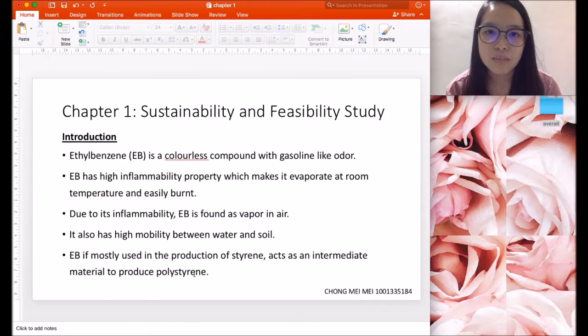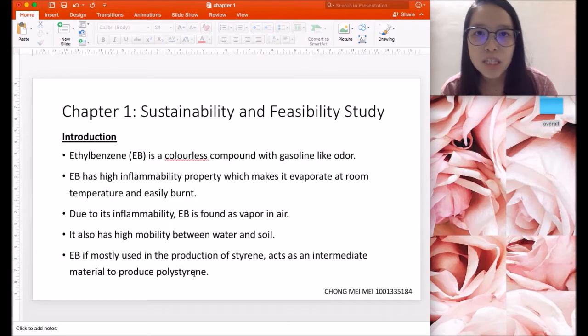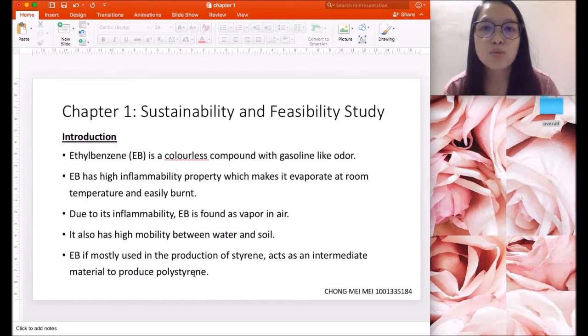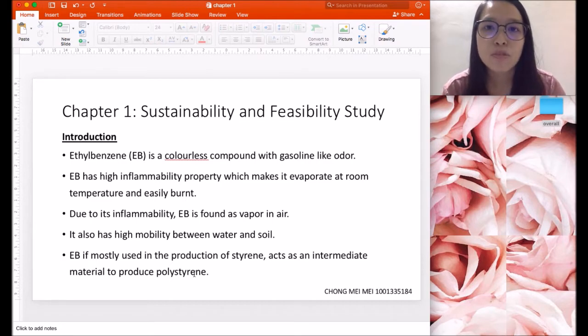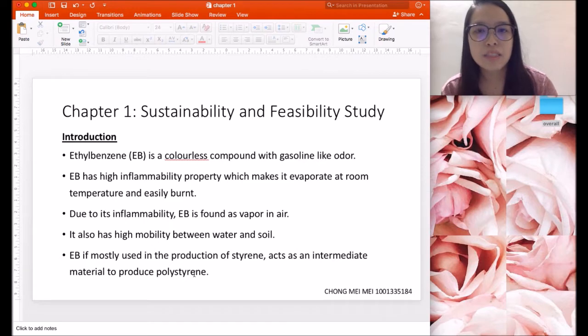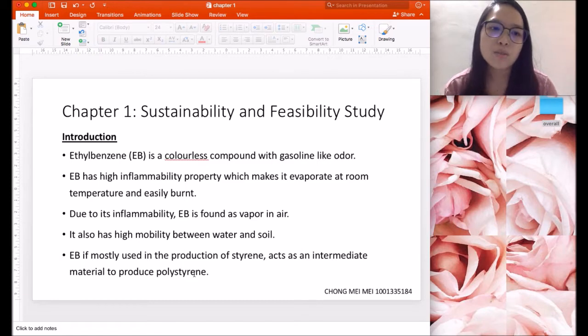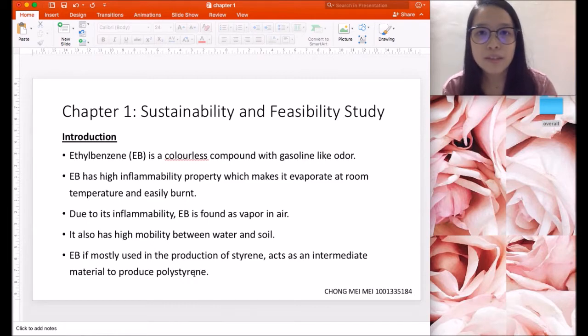I will cover chapter 1 called the Sustainability and Feasibility Study. Before we go into detail, here we will talk about the introduction of ethyl benzene. Ethyl benzene is a colorless compound with an odor similar to gasoline. Ethyl benzene has high inflammability property which makes it evaporate at room temperature. It is mostly used in the production of styrene.